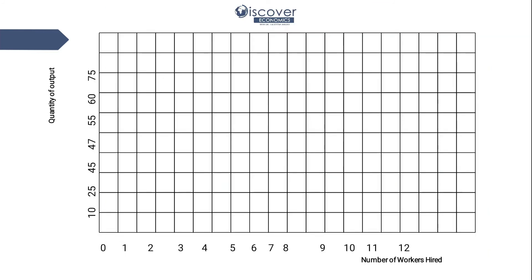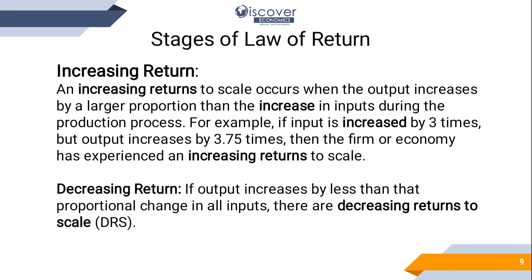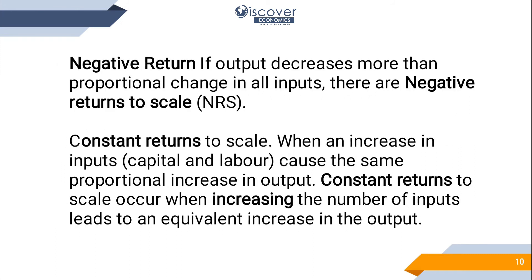Now we draw the diagram. On one axis we have number of workers and on the other axis we have quantity of output produced. The total productivity line shows four phases: first is increasing returns to scale, then decreasing returns to scale, then constant returns to scale, and then negative returns to scale. Increasing return means with every new labor your productivity is increasing at an increasing rate. Decreasing return means productivity is still increasing but at a decreasing rate.